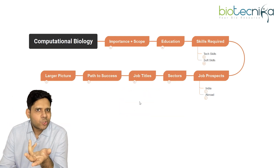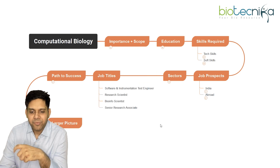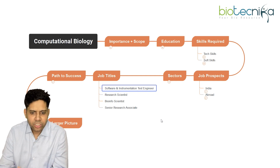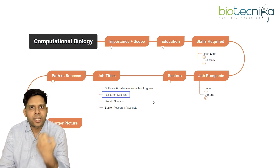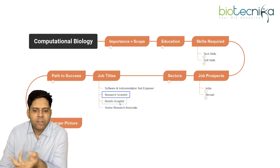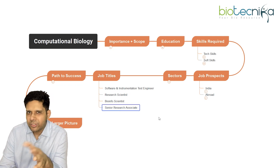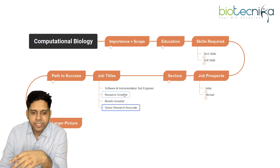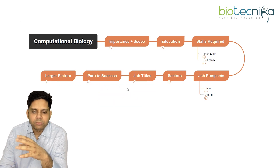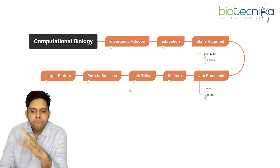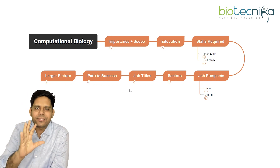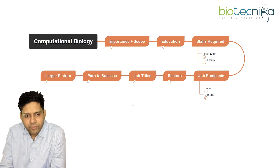What kind of job titles will you get? Once you get in, you may get titles like software and instrumentation test engineer, research scientist, bioinformatics scientist, senior research associate, or principal scientist — depending on the company and the career ladder. These are the job titles you can expect, though this is a reference list, not a complete one.